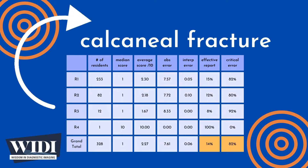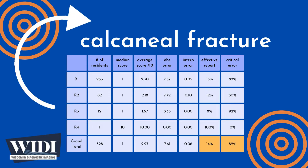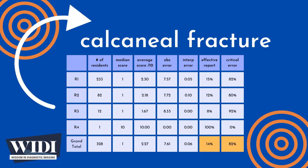We define an effective report to be one which achieves scores between 7 and 10. In terms of letter grades, this would be A and B. In this most missed case, 14% of residents produced effective reports.